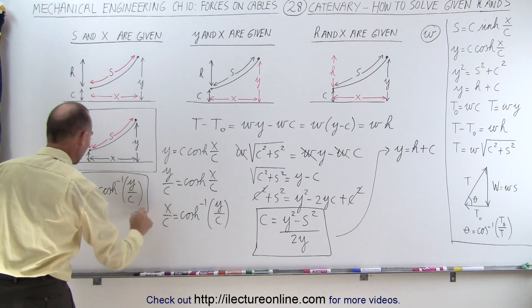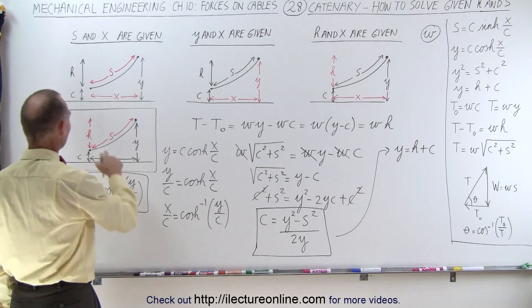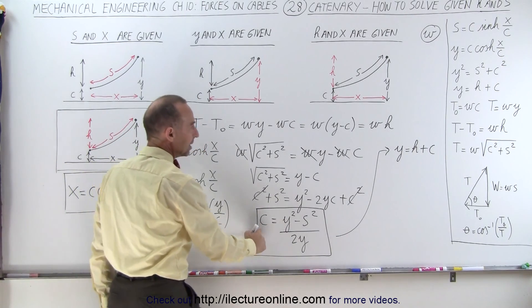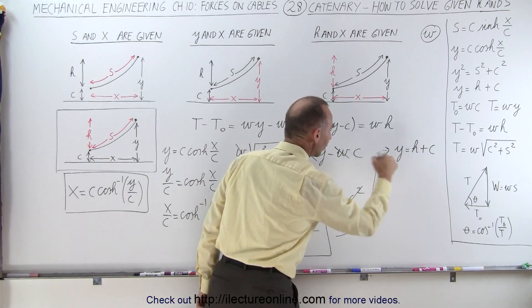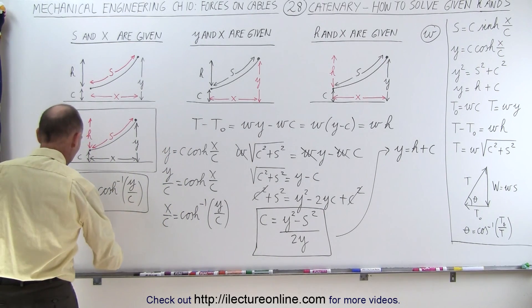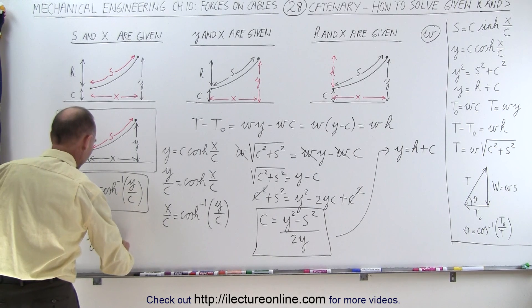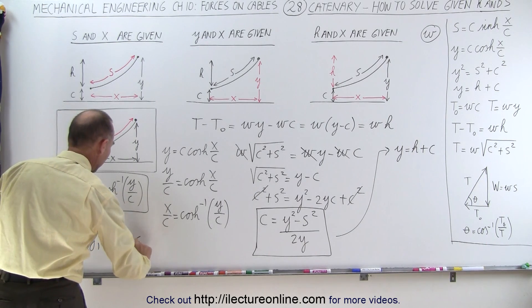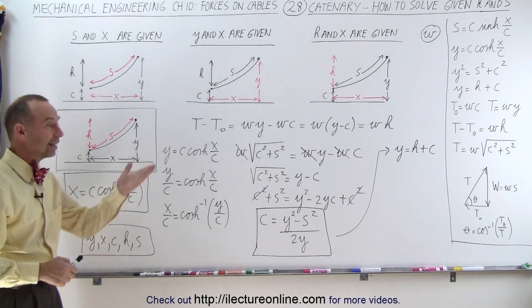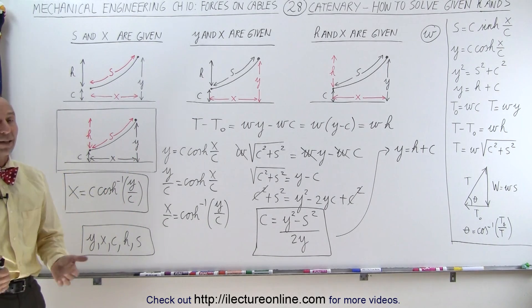And this is then what gives me X. So I started with H and S. I used this equation to find C. Then I found Y using this equation. And finally, I found X using this equation, which then tells me I know Y, X, C, H, and S. And now that I have all five variables, I can go ahead and find everything else I need to know about the cable.